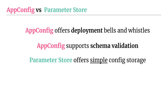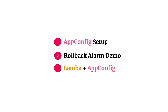Now let's move on to the demo, which consists of three steps: basic AppConfig setup — creating an environment, configuration profile, and doing a simple deployment; incorporating AppConfig with a rollback alarm that automatically rolls back when an alarm is in alarm state; and integrating Lambda with AppConfig using the AWS Lambda AppConfig layers that simplify accessing config in your AppConfig environment.